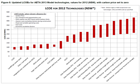LCOE data from the California Energy Commission report titled 'Estimated Cost of New Renewable and Fossil Generation in California' provides model data calculated for all three classes of developers: merchant, investor-owned utility (IOU), and publicly owned utility (POU).